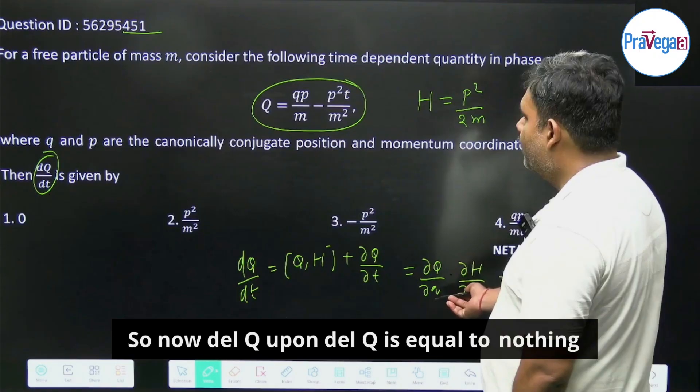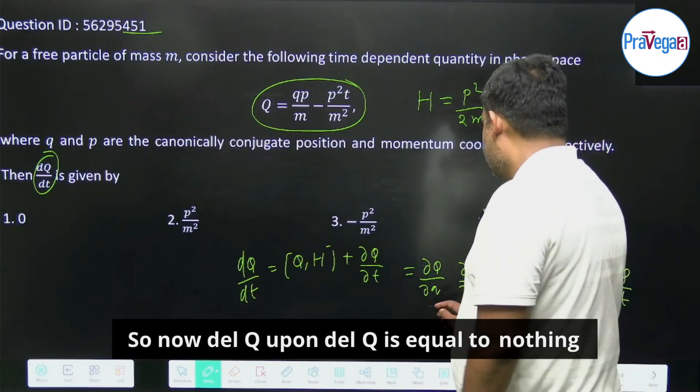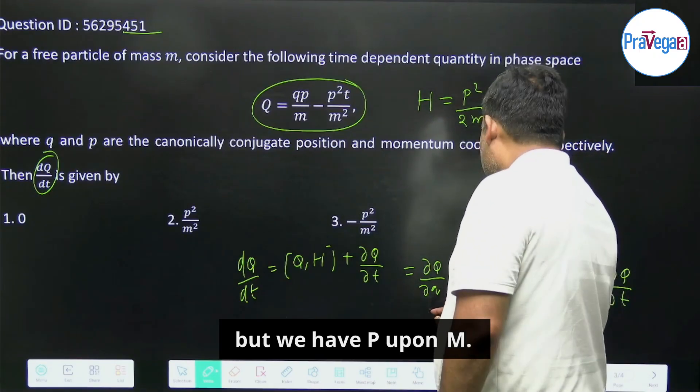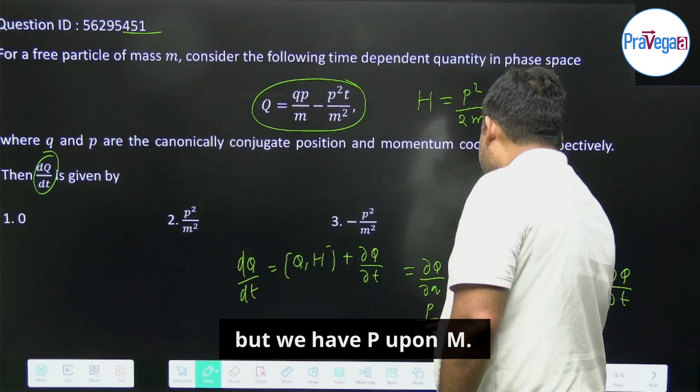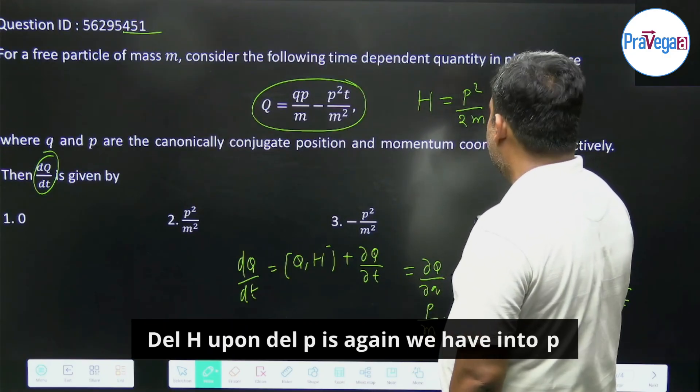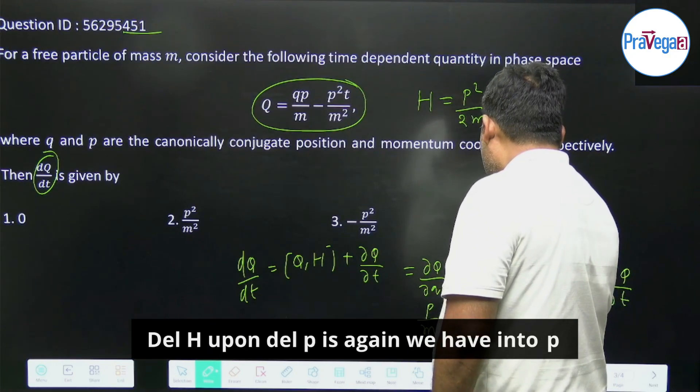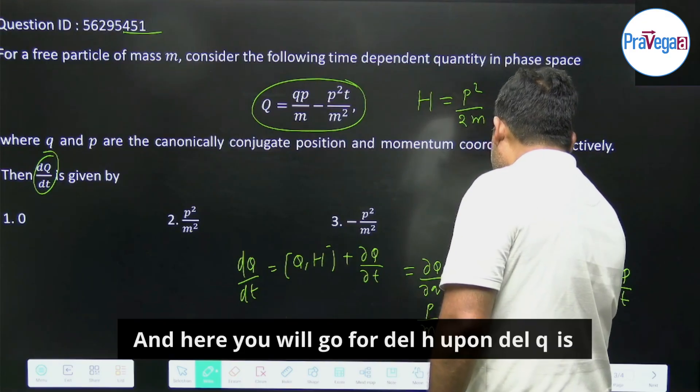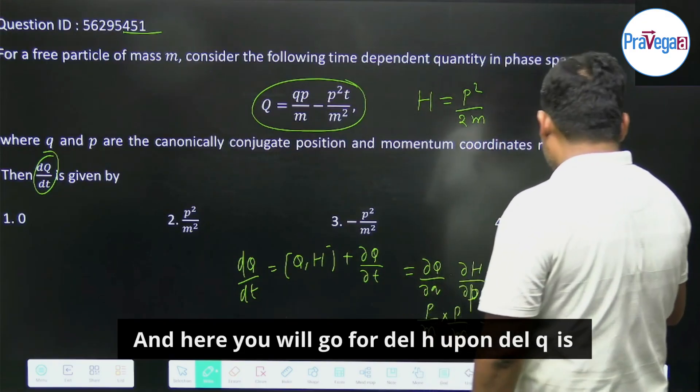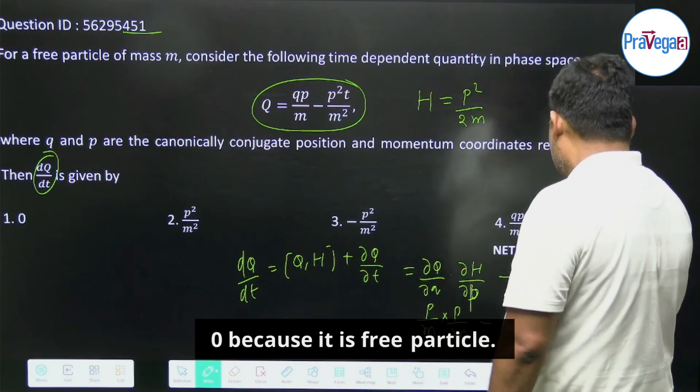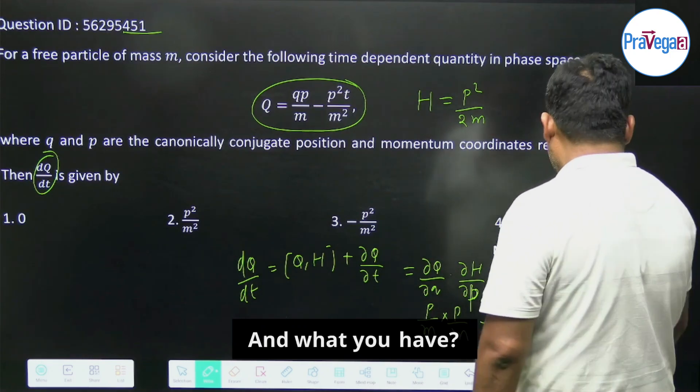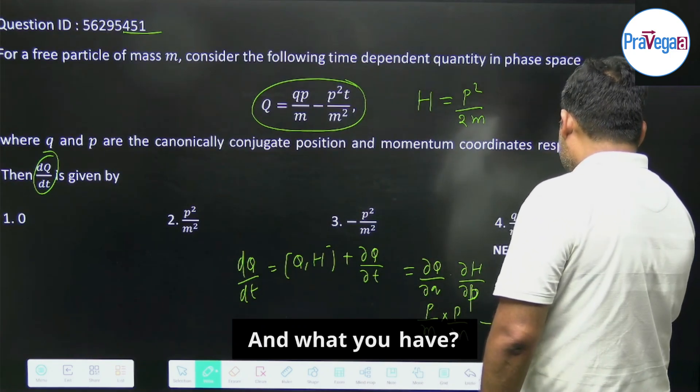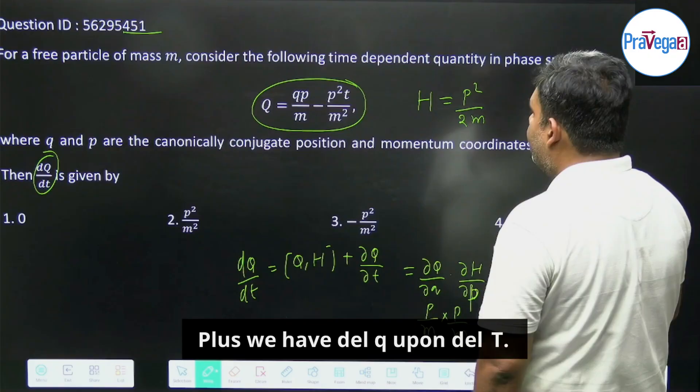So now del Q upon del q is equal to p upon m. And what do you have? Del H upon del p is again p upon m. And here you will go for del H upon del q is 0 because it is free particle, so this complete term is 0. Plus we have del Q upon del t.